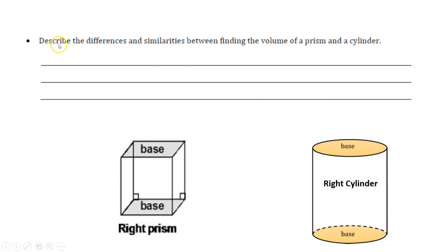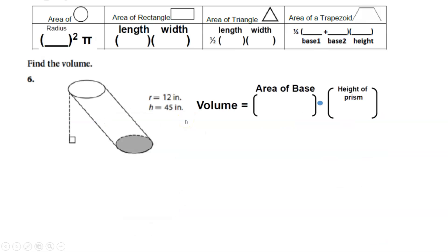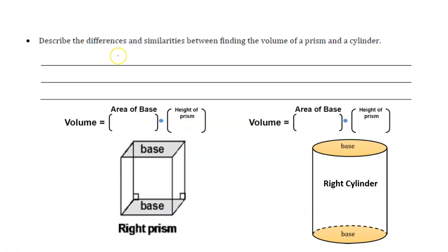The next question is asking, describe the differences or similarities you notice between finding the volume of a prism and a cylinder. What are some similarities you notice about those two formulas? What are some differences that you see now that's different about those formulas?